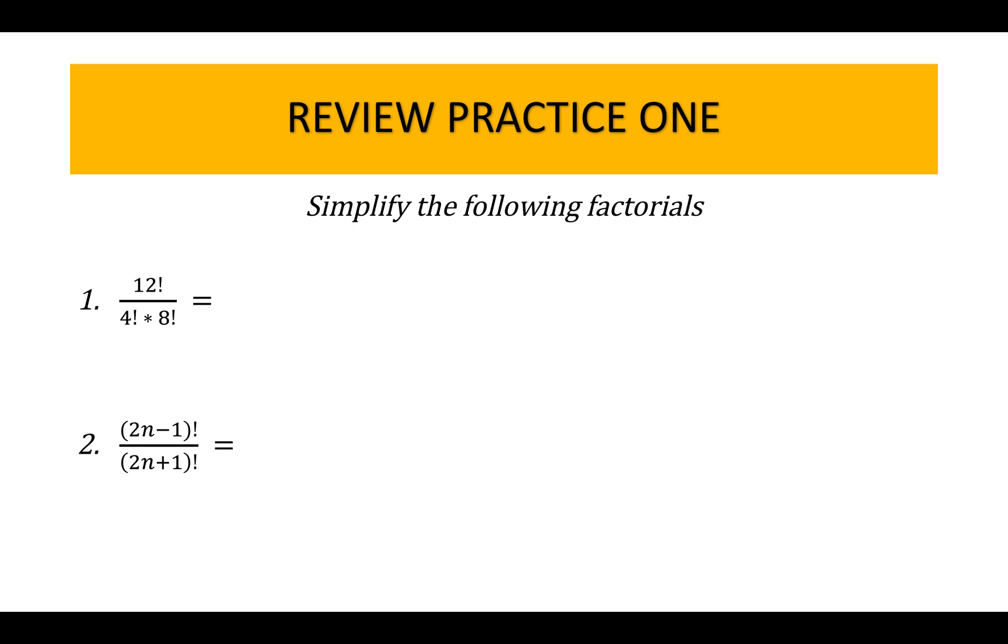Here's a simple question. The first question is 12 factorial divided by 4 factorial times 8 factorial. If you watch my last video, you know that you can break the 12 factorial down to 12 times 11 times 10 times 9 and then 8.